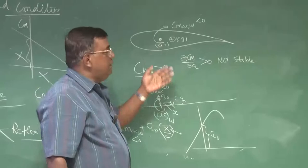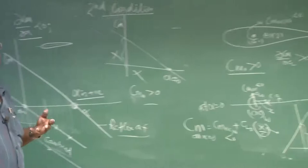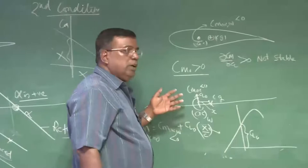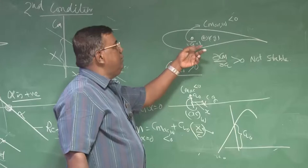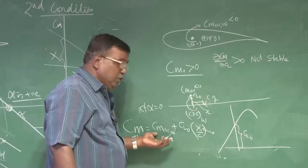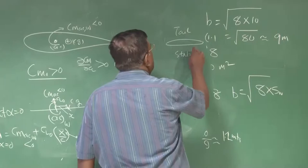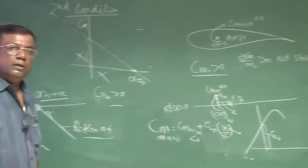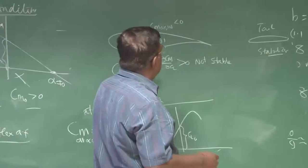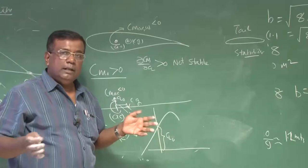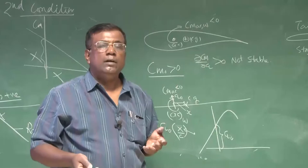For a flying wing using a cambered aerofoil with AC ahead of CG, you need a control system, since unstable does not mean uncontrollable. In practice, for a conventional aircraft with a tail, the wing takes care of lift while the horizontal tail stabilizer provides static stability, giving them complementary roles. The horizontal tail is called the horizontal stabilizer and the vertical tail the vertical stabilizer. Next class we will continue from here. Thank you very much.